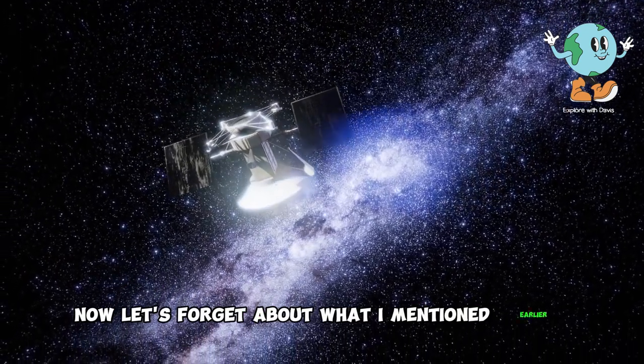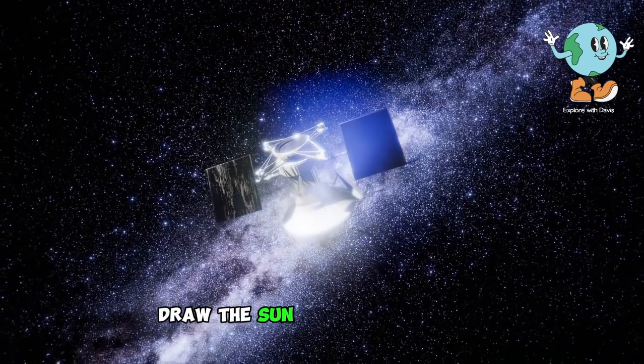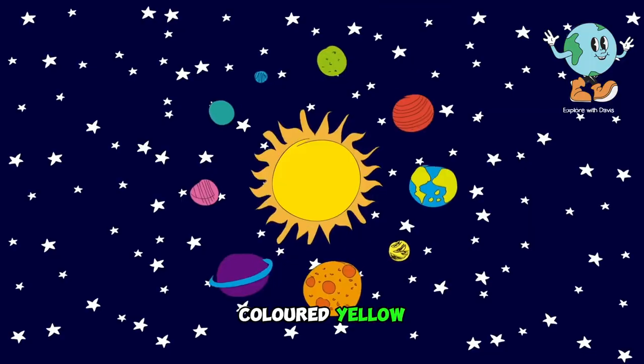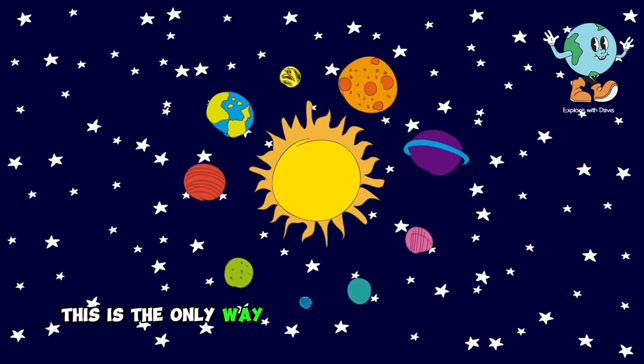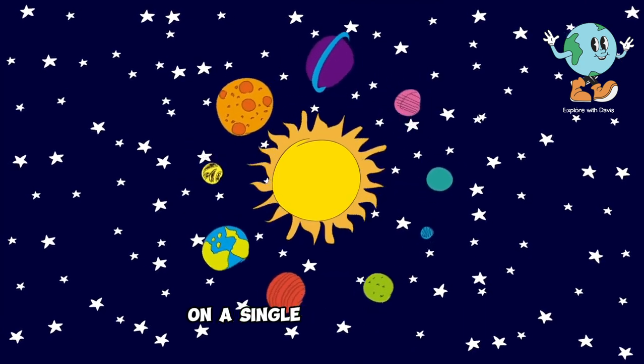Now, let's forget about what I mentioned earlier and focus on drawing. Draw the Sun as a round sphere, colored yellow, with the planets orbiting around it. Because, in reality, this is the only way we can gather all the planets on a single sheet of paper.